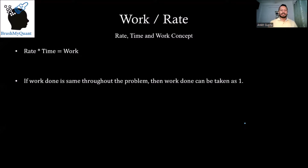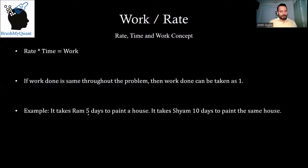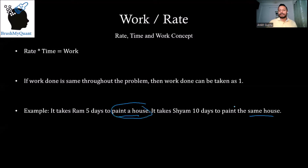If the work done is the same throughout the problem, then the work done can be taken as 1. For example, it takes Ram 5 days to paint a house and it takes Sham 10 days to paint the same house. Since both are doing the same work — painting a house — we can take the work done as 1 in this case.